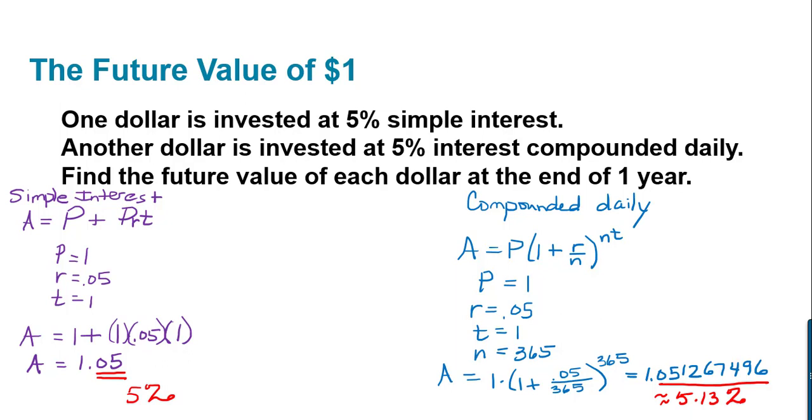Notice that the decimal part of each of these future value answers is the decimal form of the interest that you're earning. So what we would like to think about is when we want to find effective annual yield, how much do you earn on that dollar?